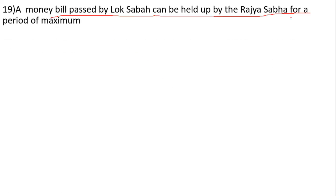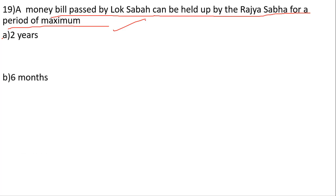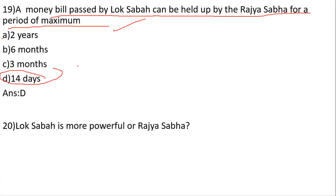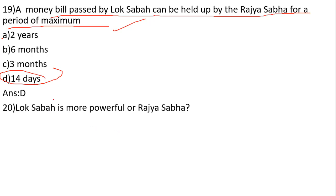A Money Bill passed by Lok Sabha can be held up by the Rajya Sabha for a maximum period of: options are two years, six months, three months, fourteen days. The correct answer is fourteen days. If Lok Sabha passes a Money Bill, Rajya Sabha can hold it for a maximum of fourteen days.